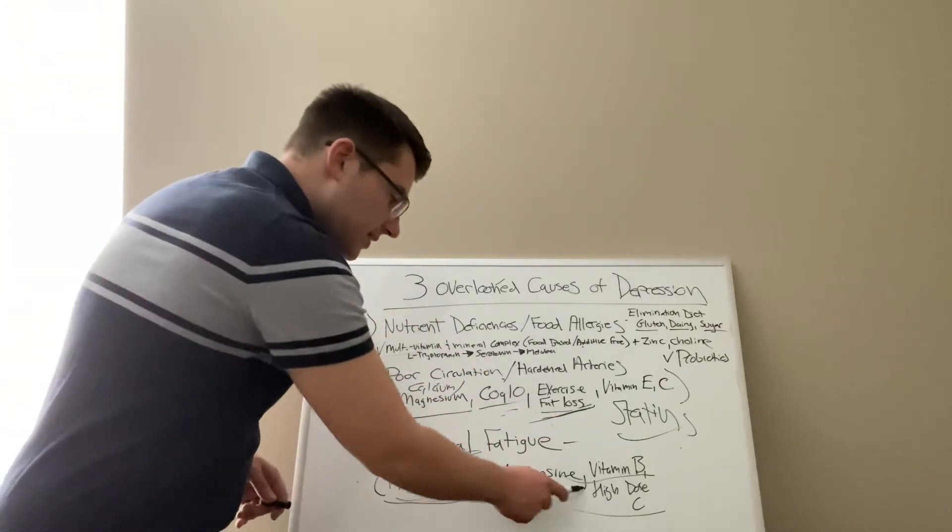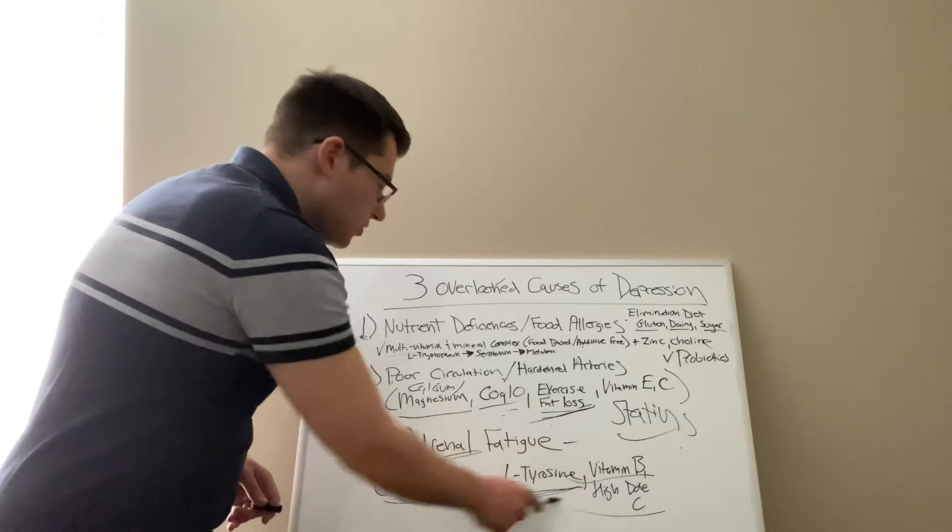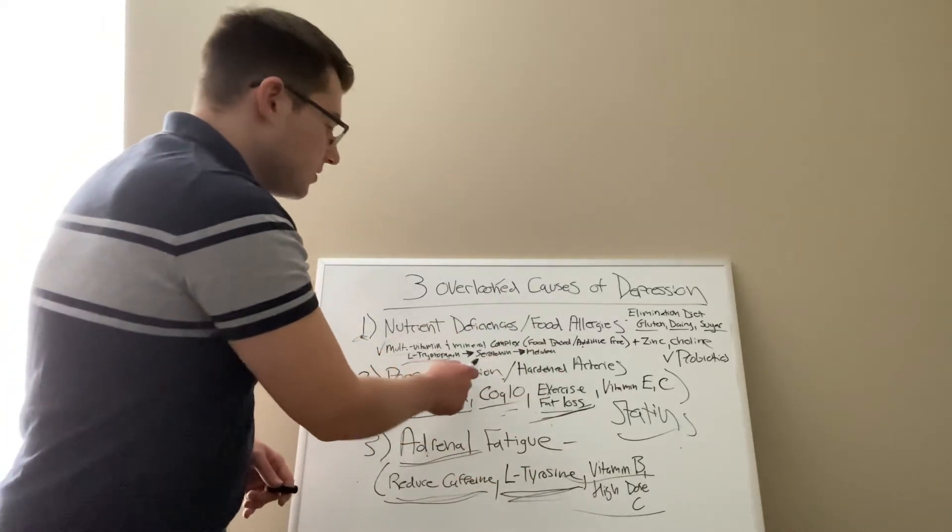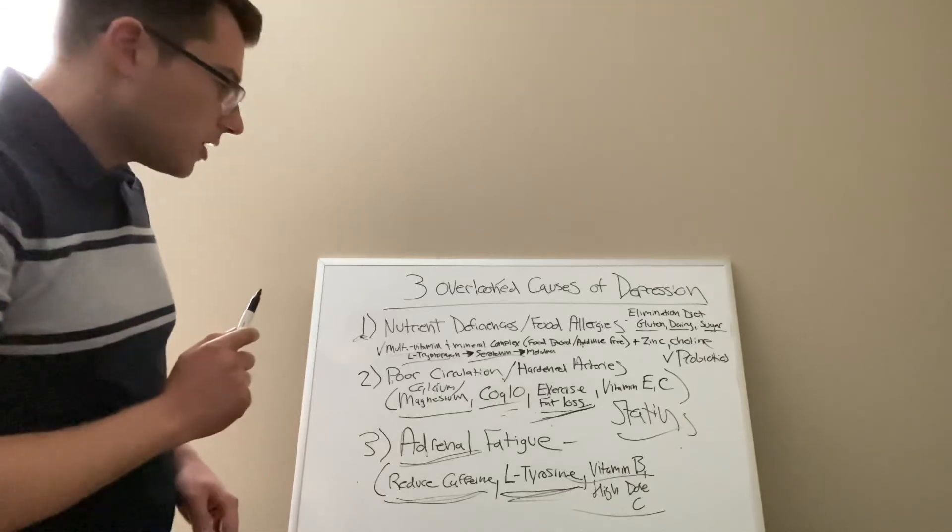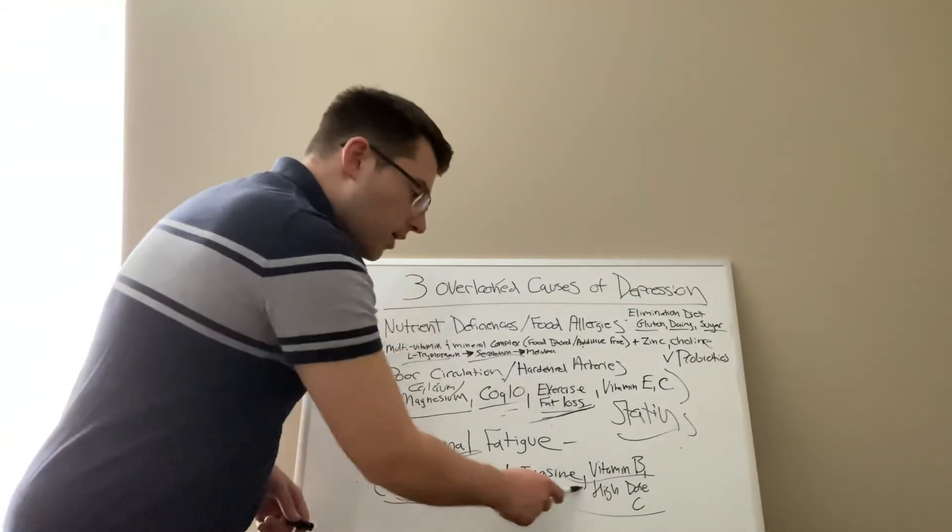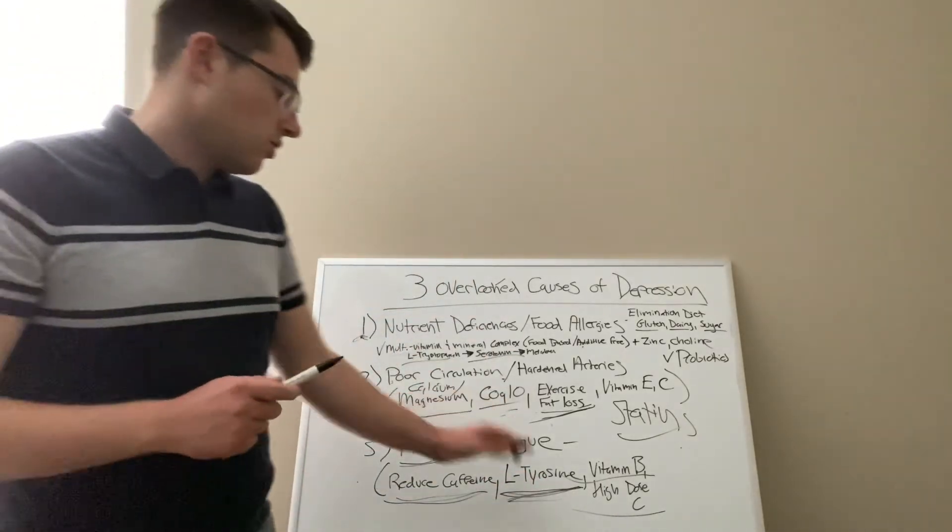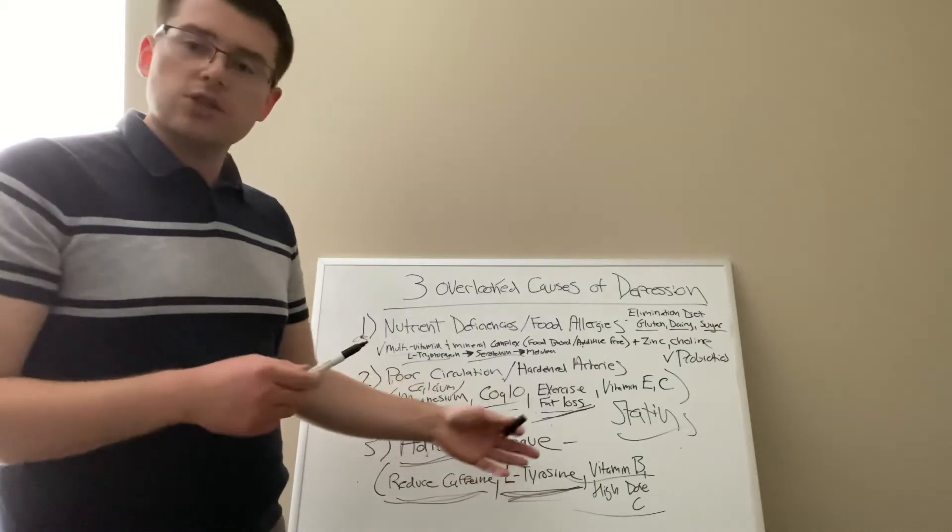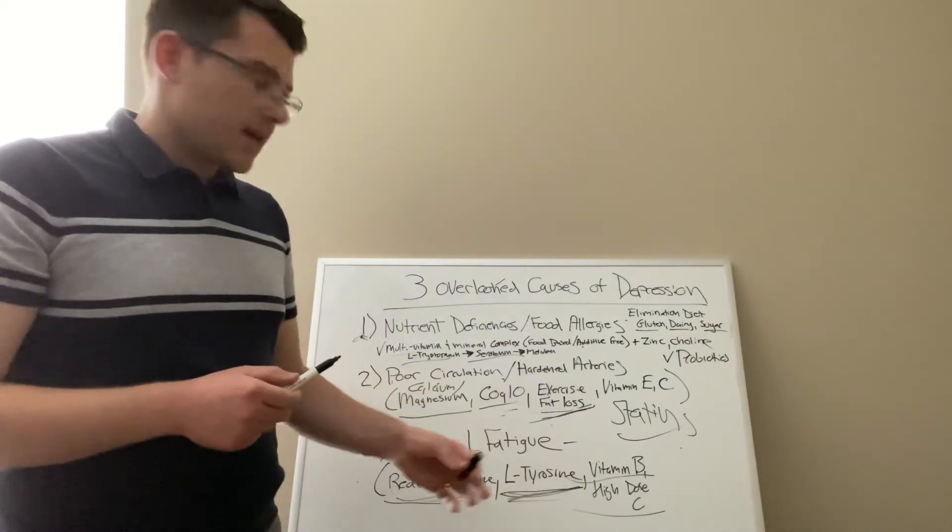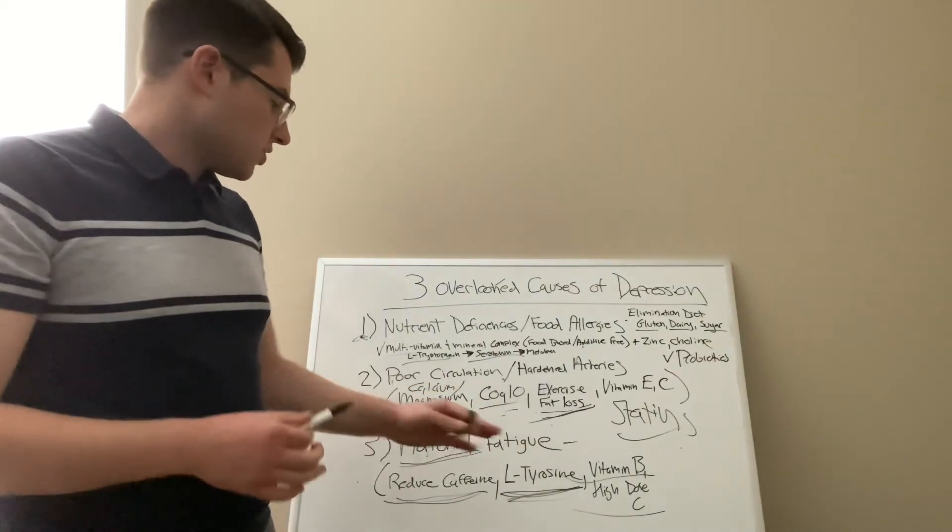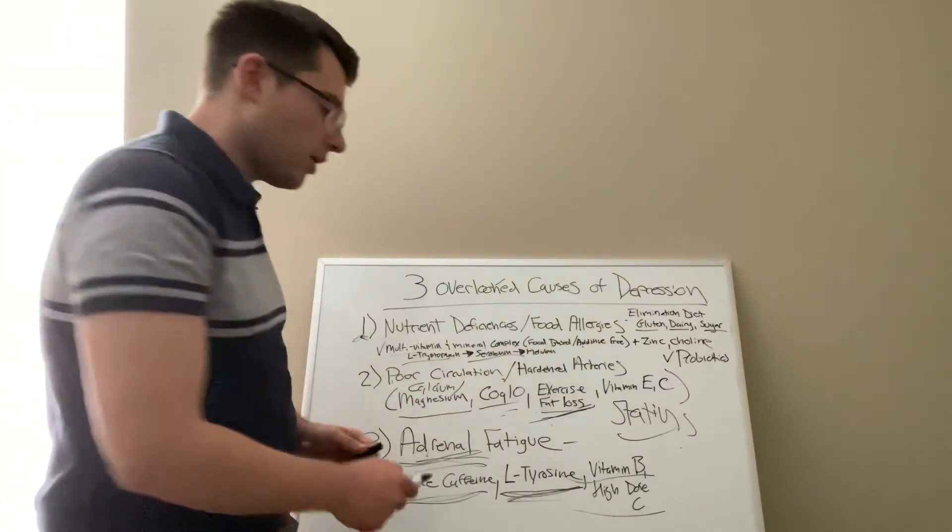Last but not least, L-tyrosine. Just like L-tryptophan is the precursor to your happy little neurotransmitter named serotonin, L-tyrosine is going to be your neurotransmitter production for things like dopamine and norepinephrine. It's going to really help your adrenals to take the load off.